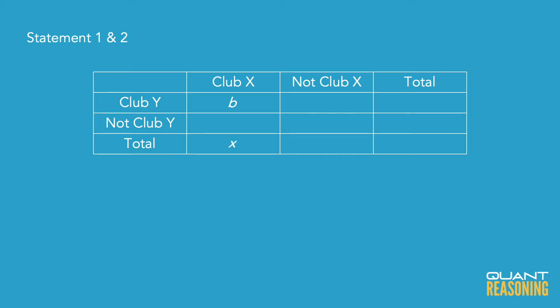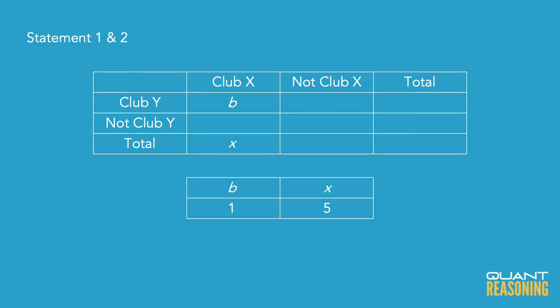Statement one tells me that B to X — using X as the total number of members in Club X — B to X is 20 to 100, or 1 to 5 if we reduce. And statement two is also talking about B: that same number of members who belong to both clubs, but this statement gives us the ratio of B to Y, where Y is the number of members of Club Y. And what is this telling me? That B to Y is 3 to 10.